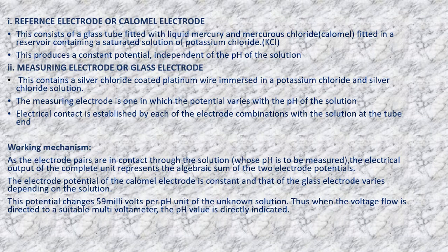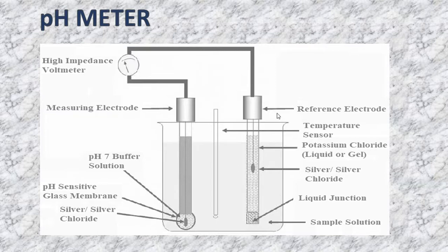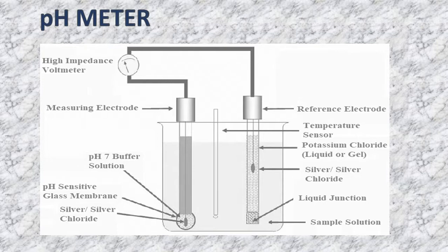The reference electrode consists of a glass tube with liquid mercury and mercurous chloride — called calomel. Sometimes silver and silver chloride are also used. This whole assembly is fitted in a reservoir of saturated potassium chloride (KCl) solution, which may be liquid or gel. This electrode produces a constant potential and is independent of the pH of the solution.